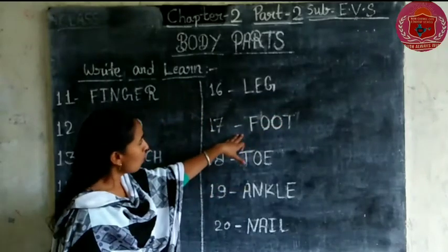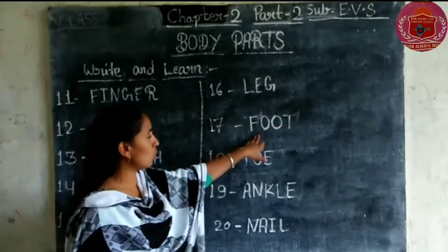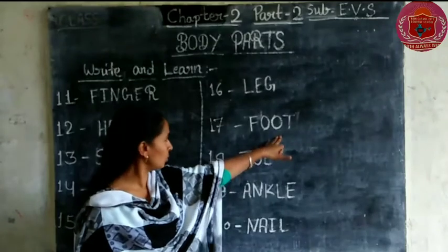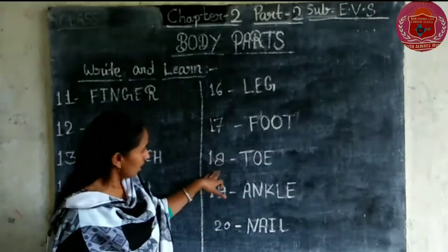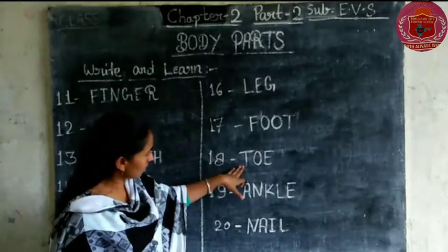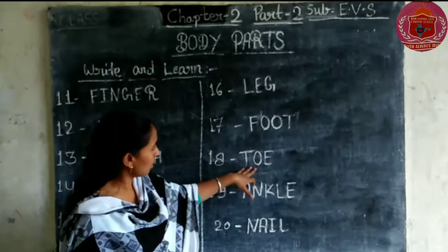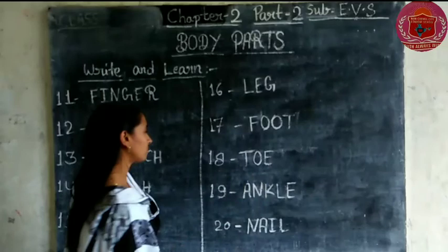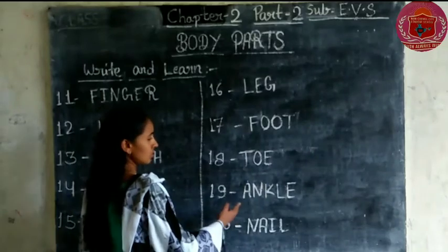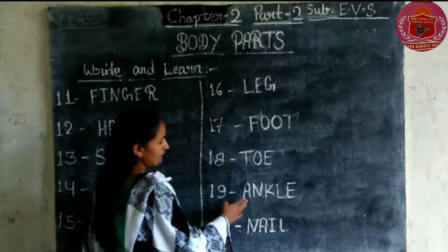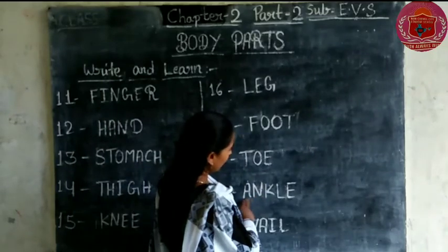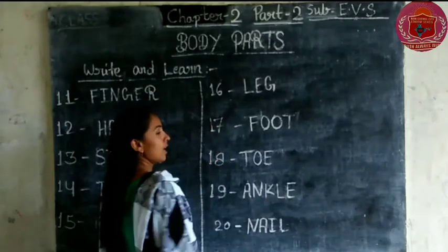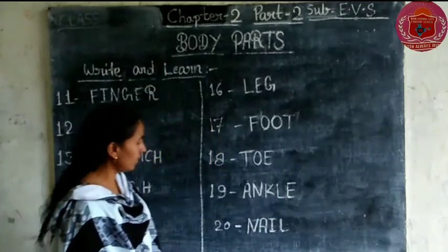Foot. F-O-O-T. Foot means paon. Next, toe. T-O-E. Toe means pair ki ungli. Next, ankle. A-N-K-L-E. Ankle.